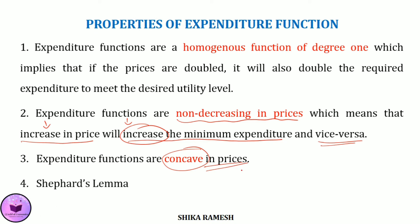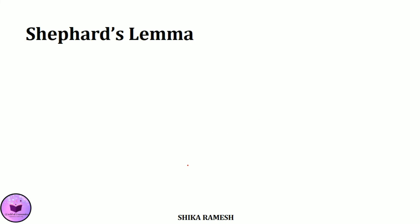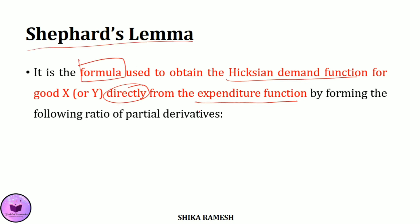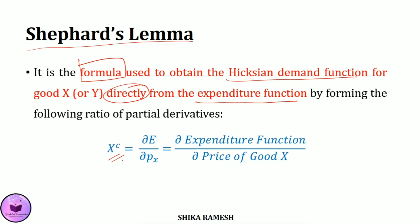The last and one of the most important properties of the expenditure function is Shephard's Lemma. Shephard's Lemma states that the expenditure function differentiated with respect to price yields the Hicksian demand for that good. The formula is: compensated demand for good x equals del E by del Px, that is, the derivative of the expenditure function with respect to the price of good x.